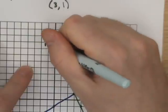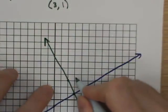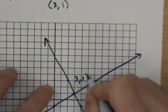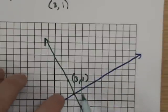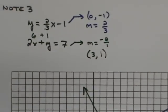I was fortunate in that my very first point was the point of intersection. 3, 1 is what we were looking for. There's example number 3 in our notes.